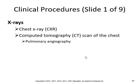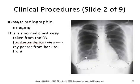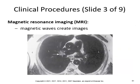For imaging: chest X-ray and computed tomography CT scan of the chest. Here's a normal chest X-ray taken from the PA — posterior-anterior — view, where the X-ray passes from the back to the front. MRI uses magnetic waves to create images.